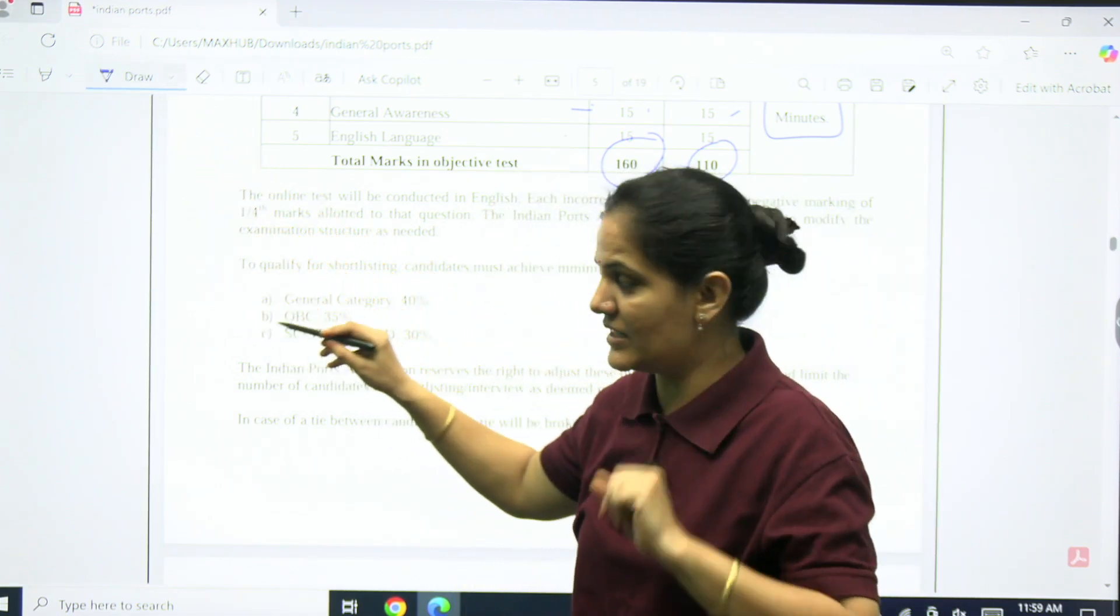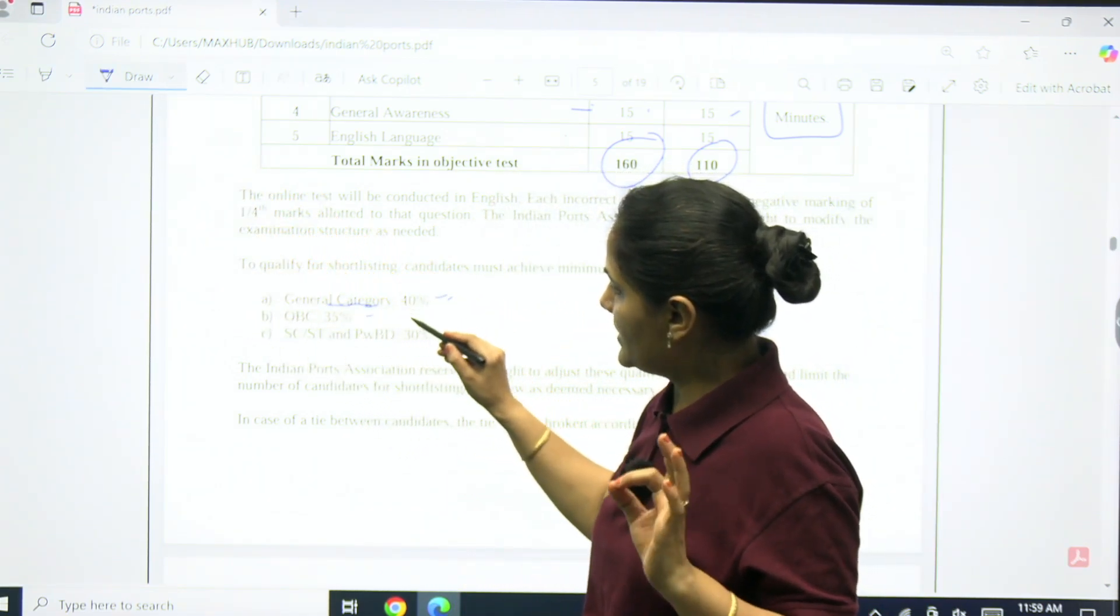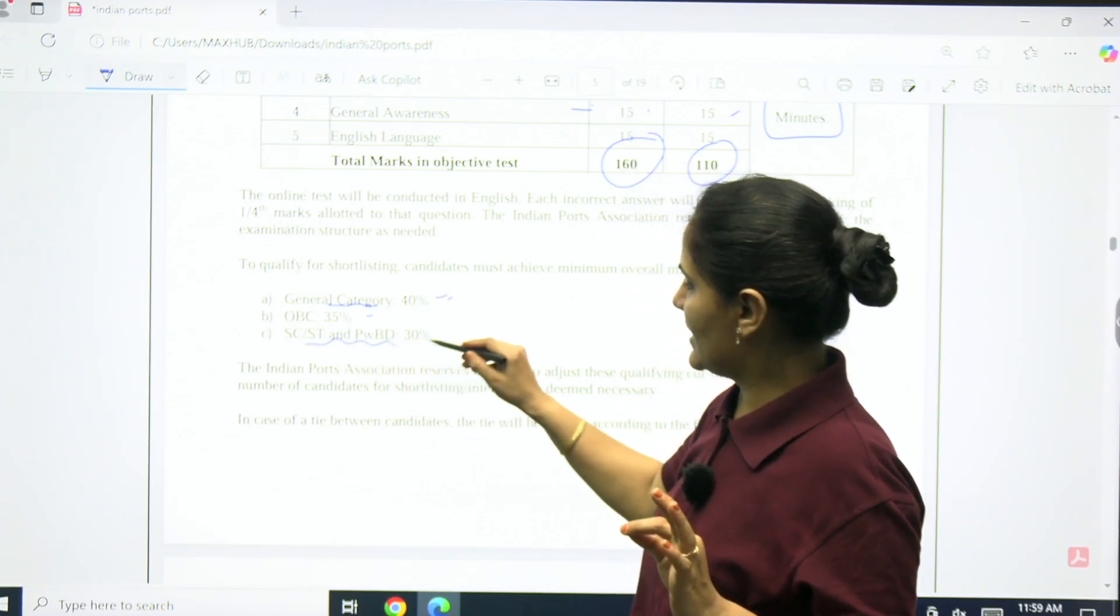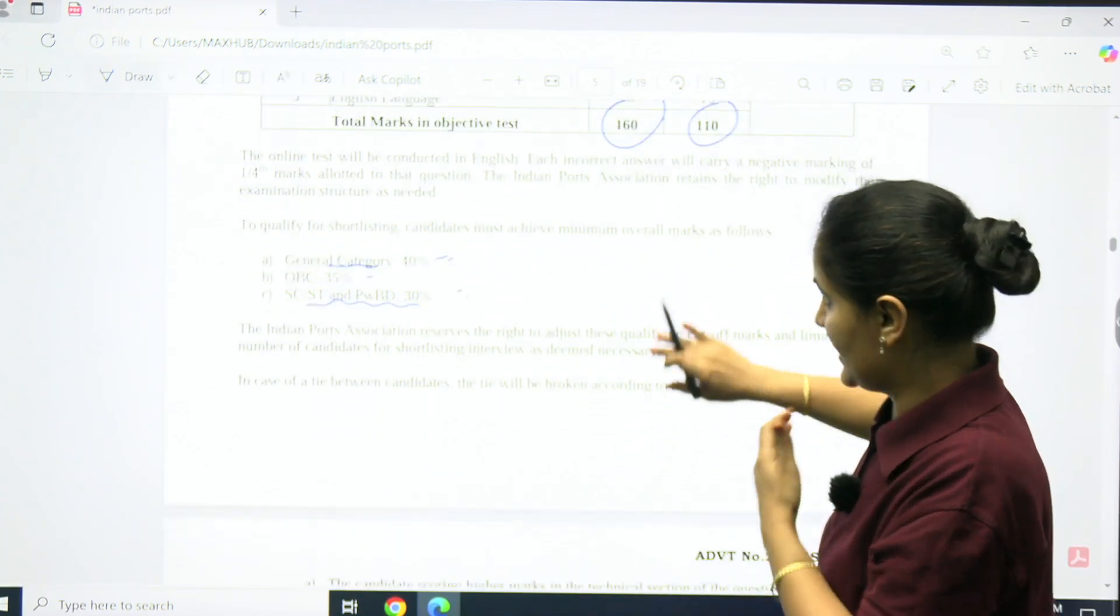What is the minimum qualifying marks required? For general category, 40% marks. OBC, 35% marks. SC/ST and PWD, 30% marks.